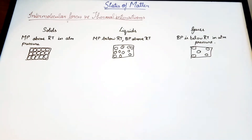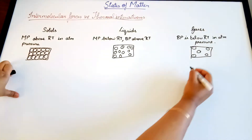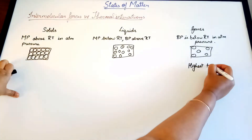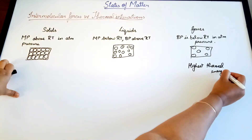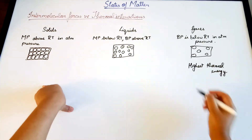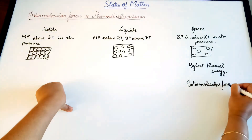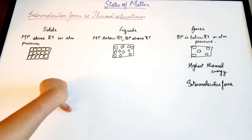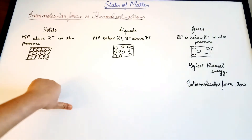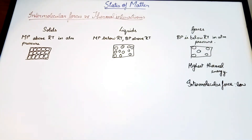The intermolecular forces for solids is the highest compared to liquids and then gases. Gases have very negligible molecular interaction between them because the molecules are far apart, so they have the highest thermal energy and the lowest intermolecular force of attraction — it's actually negligible.